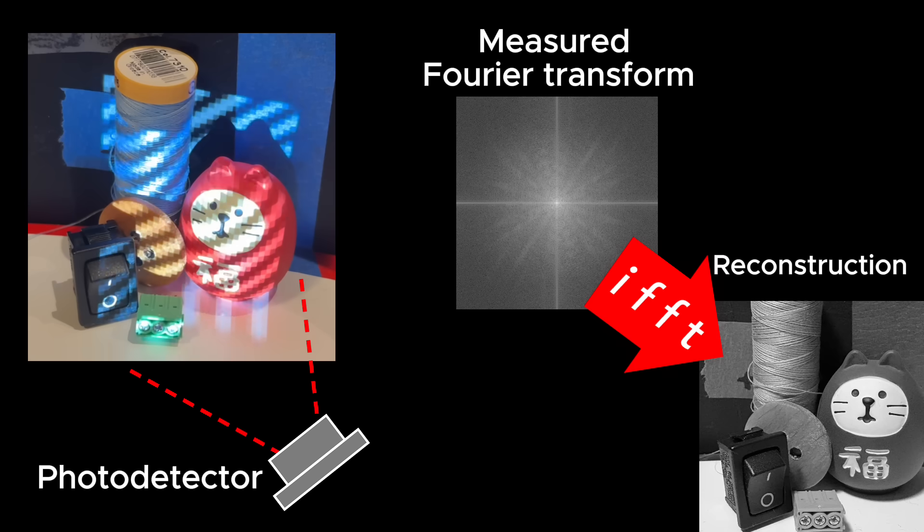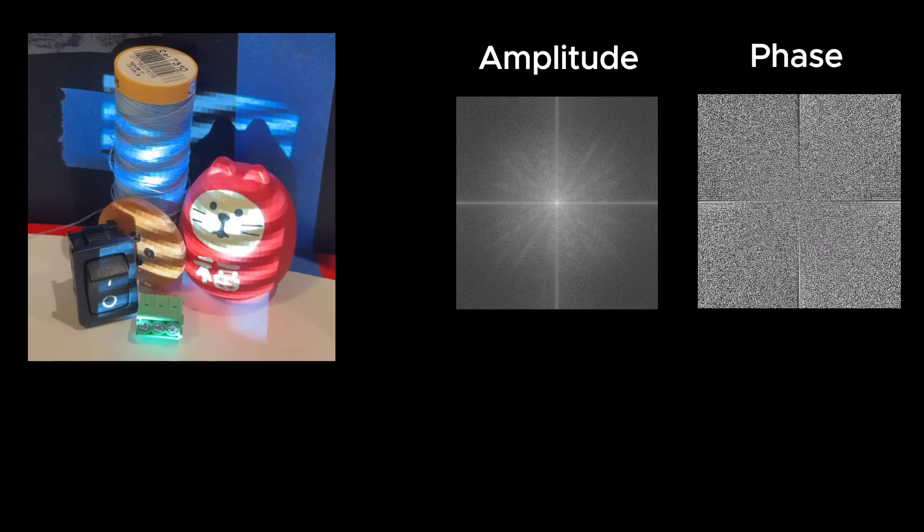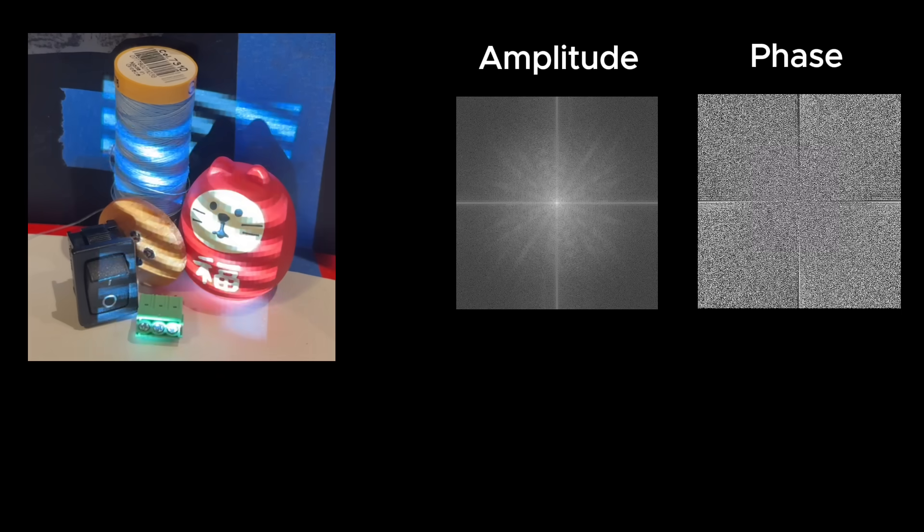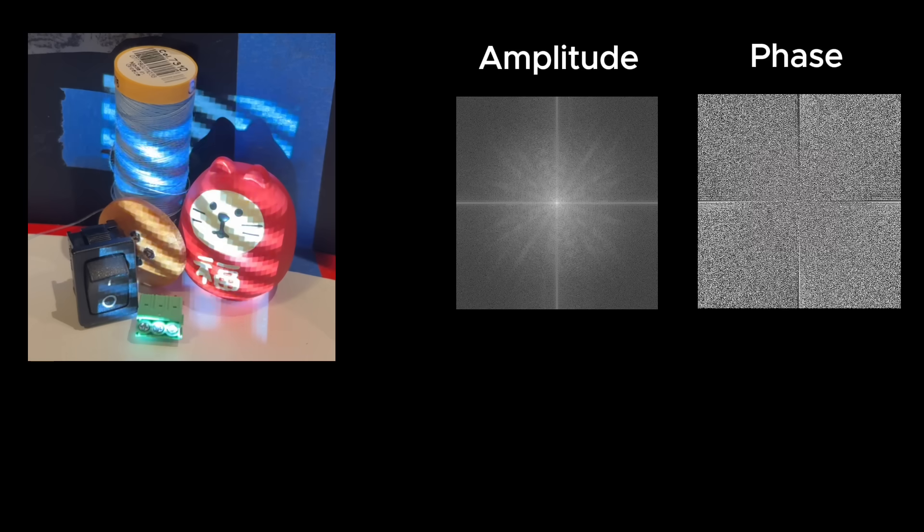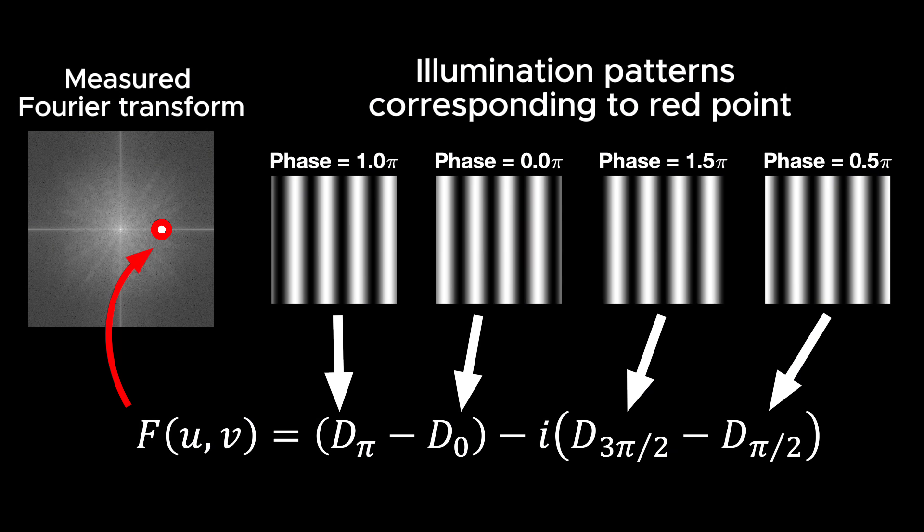It seems amazing that a Fourier transform could actually be measured directly like this. To get it to work, we need to measure both the amplitude and phase for each frequency component. I don't want to get lost in the weeds here, so in short, for each frequency, you need to use multiple illumination patterns with different phase shifts. And then each point in the Fourier transform is calculated using this equation, where D is the photo detector measurement and the subscript corresponds to the phase of the illumination pattern.